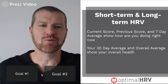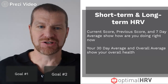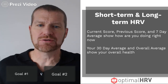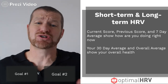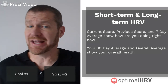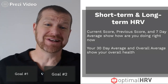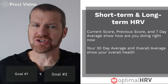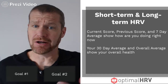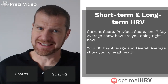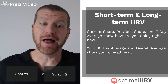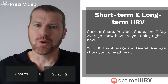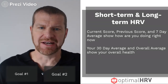In the first part of our training, we want to talk about short and long-term heart rate variability trends and scores. Your current score, previous score, and seven-day average are your short-term scores — they answer the question: how am I doing today or this week? These scores will fluctuate quite a bit, so we don't want to get too stressed about a score or two. What we want to see is our 30-day and overall average — our long-term scores — improve over time.